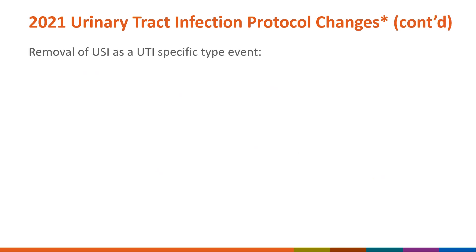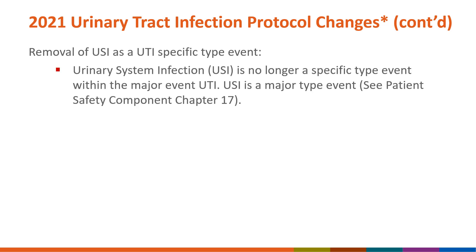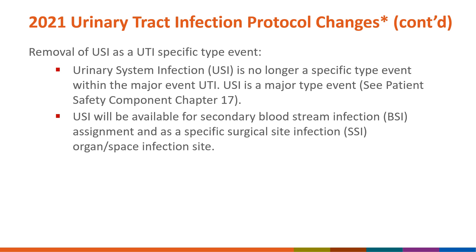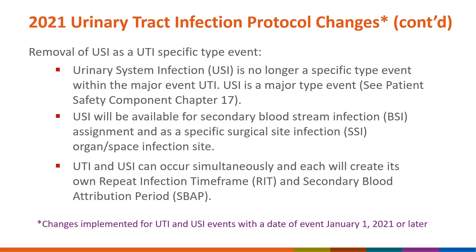Another change is the removal of UCI as a UTI specific type event. The urinary system infection, or UCI, is no longer a specific type event within the major event UTI. UCI is a major type event whose criterion can be seen in the Patient Safety Component Manual, Chapter 17. UCI is available for secondary bloodstream infection, or BSI assignment, and as a specific surgical site infection or SSI organ space infection site. UTI and UCI can occur simultaneously and each creates its own repeat infection timeframe, or RIT, and secondary blood attribution period, or SBAP.